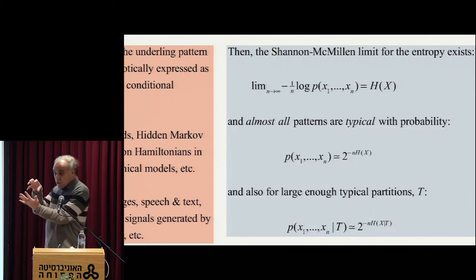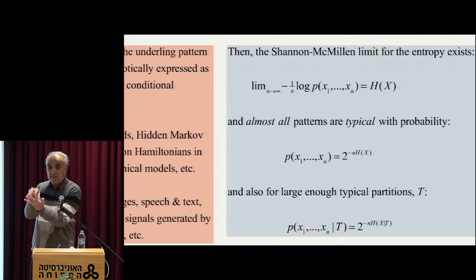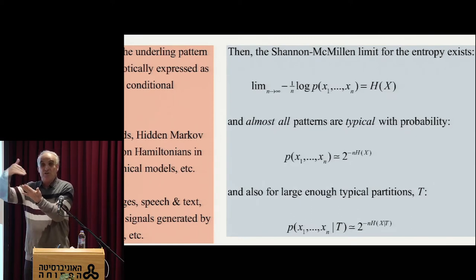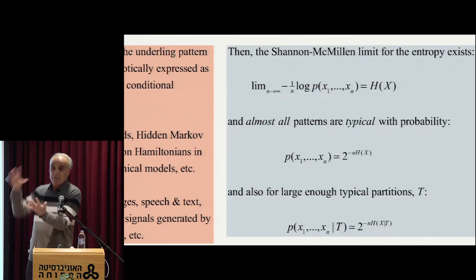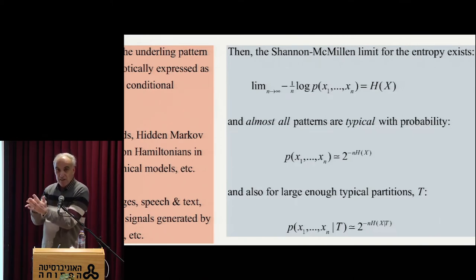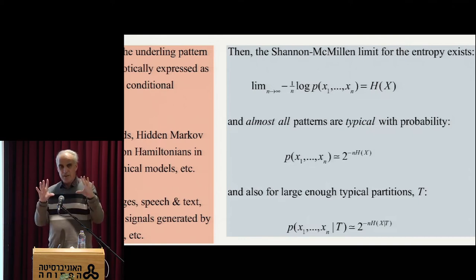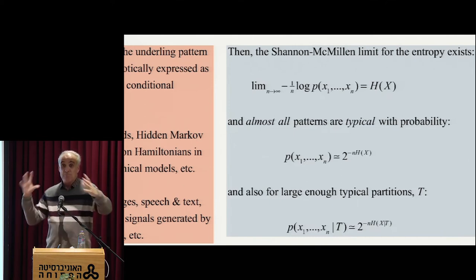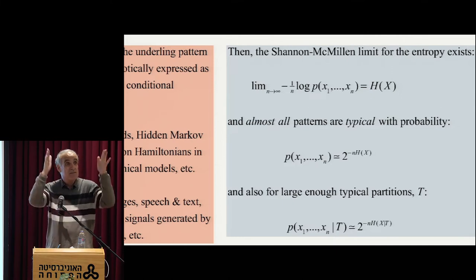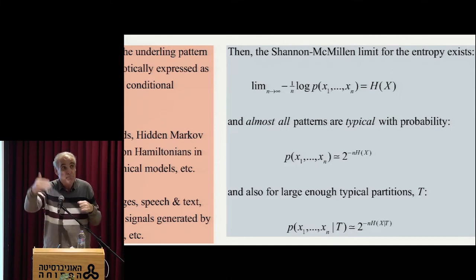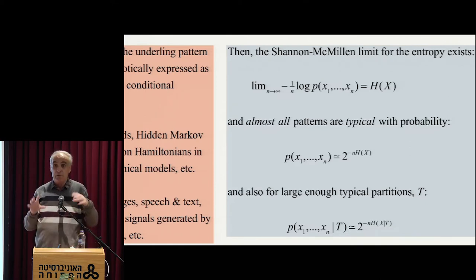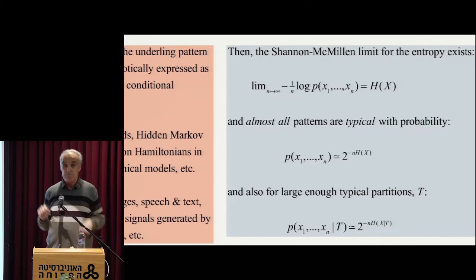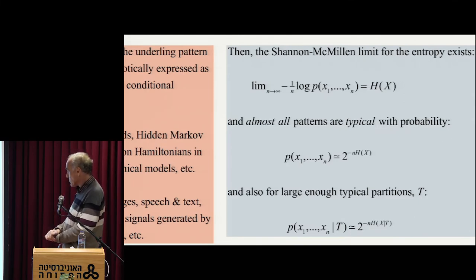I also assume that each of those partitions — induced by the neurons in the layers, so each layer is essentially some sort of a partition of my patterns — conditioned on the layer also assumes typicality. That's a very big assumption. My layers have to be sufficiently coarse such that enough patterns are mapped to the same value of each of the layers, and that's getting better and better when I move further into the network, because the partition is going to be coarser and coarser, because of the data processing inequality.